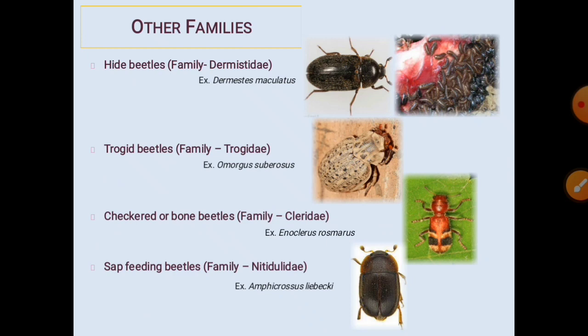Other Coleoptera families include: hide beetles from the family Dermestidae, which feed on the skin of dead bodies; trochid beetles from the family Trochidae, which feed on the remains of dead bodies; and checkered or bone beetles from the family Cleridae, which feed on bones and are the last beetles to arrive after all flesh, remaining tendons, muscles, and bones are consumed.